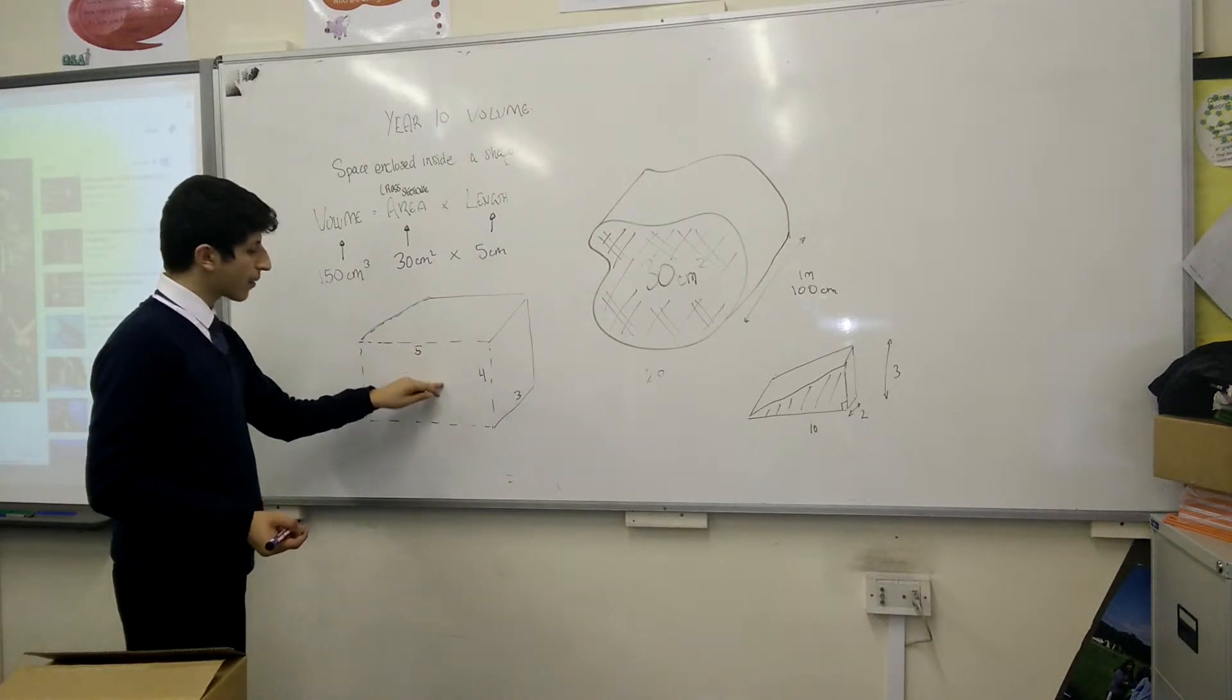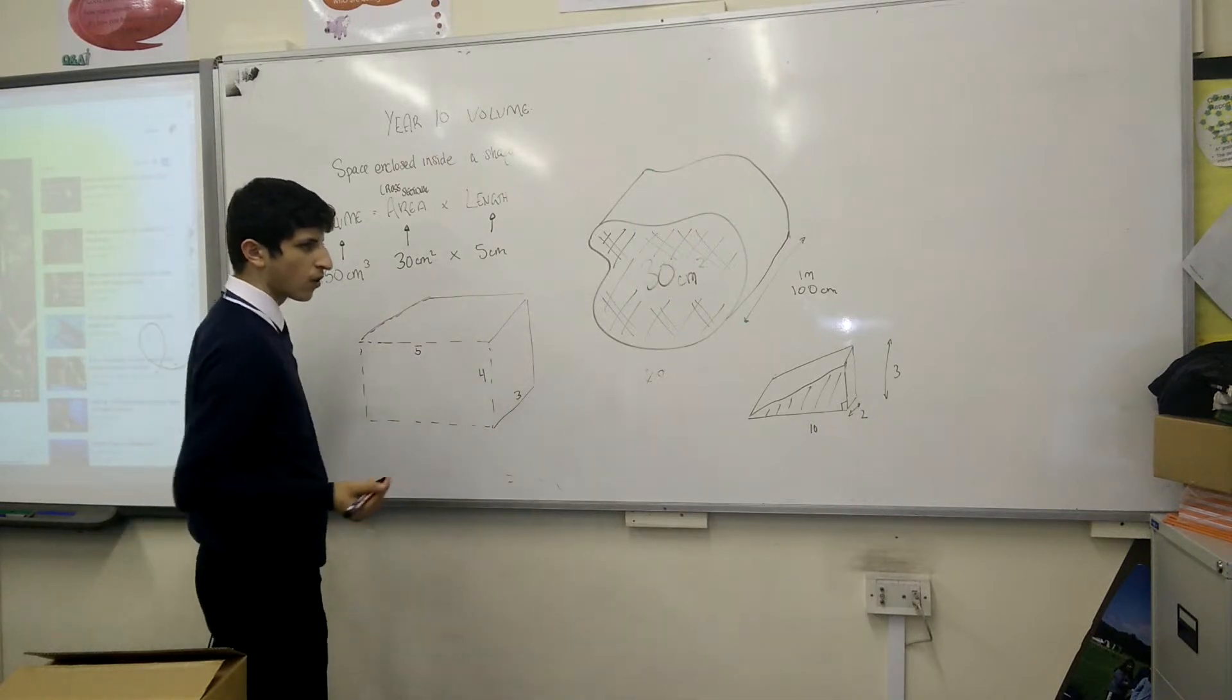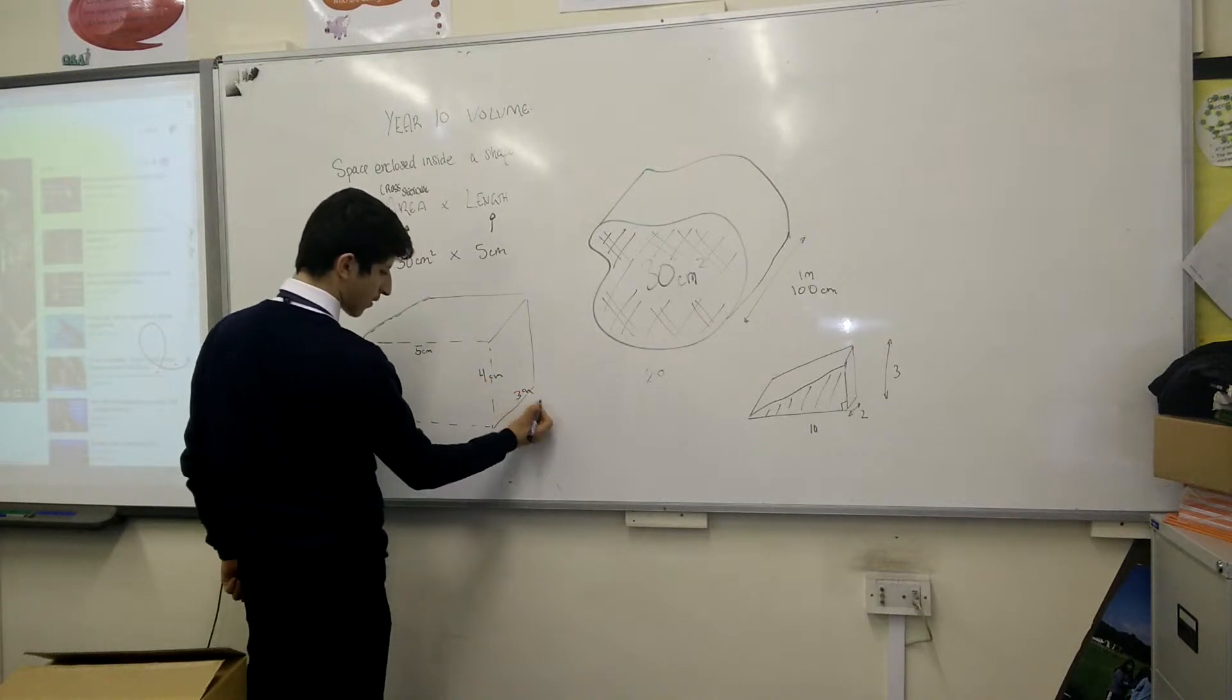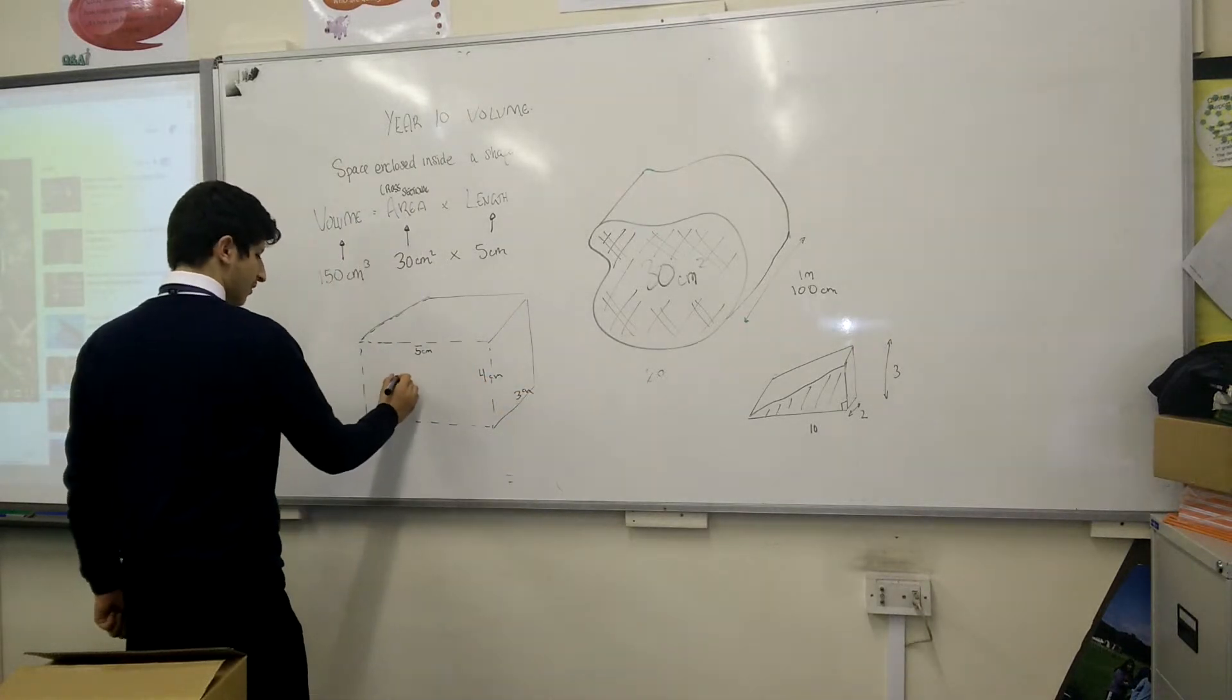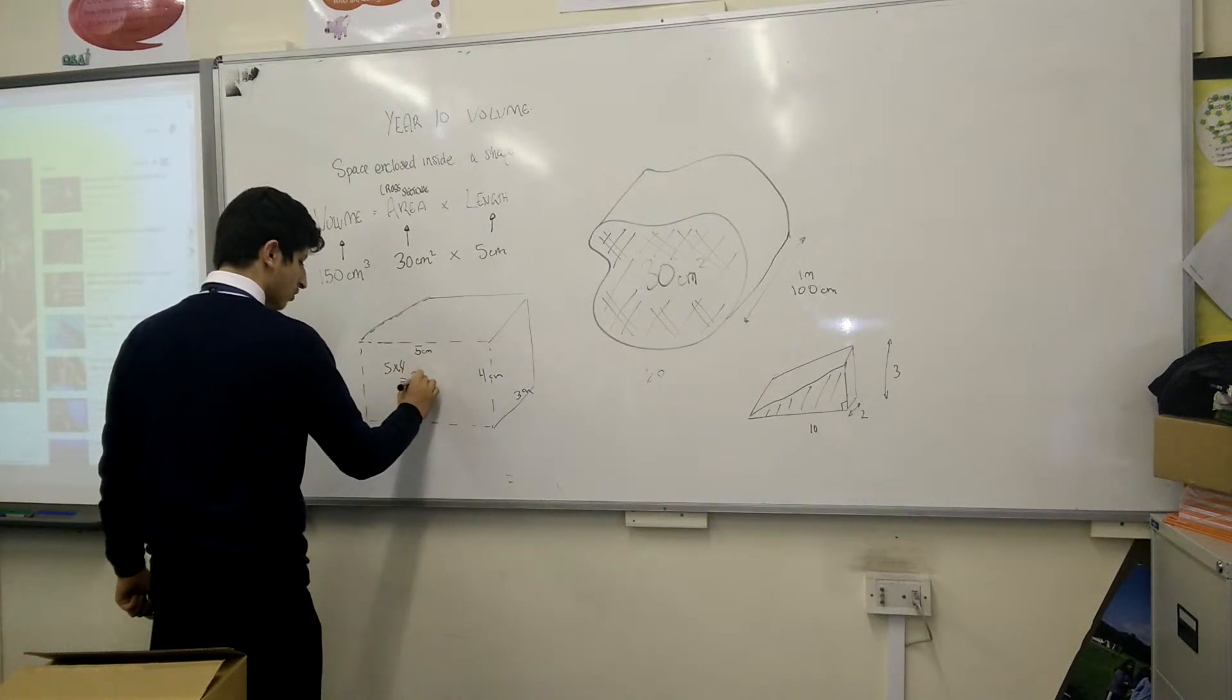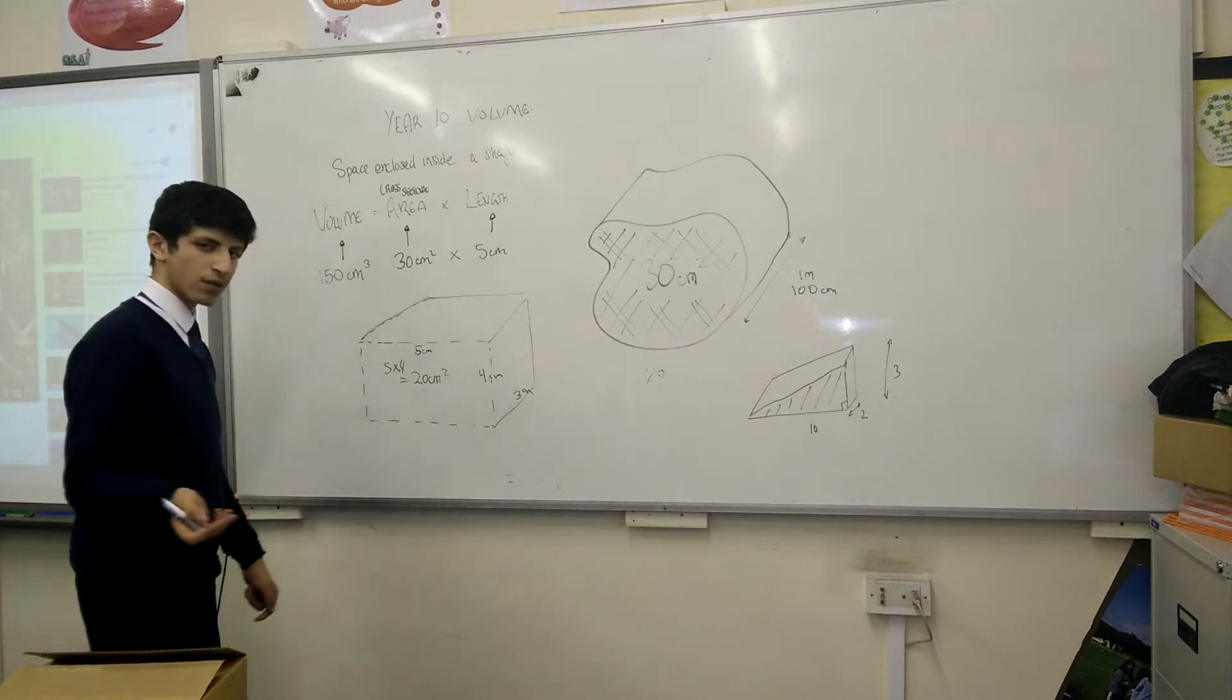So, the cross-sectional area of this prism is five times four centimetres. It can be any unit, as long as they're all the same. So this is five times four, equal to twenty centimetres squared. Remember squared, you're saying it's an area.